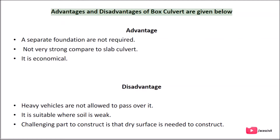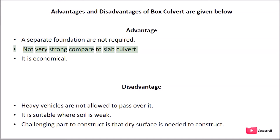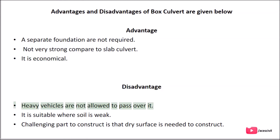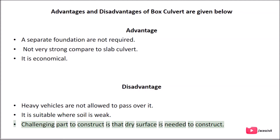Advantages of box culvert: Separate foundations are not required. It is economical. Disadvantages: It is not as strong compared to slab culvert. Heavy vehicles are not allowed to pass over it. It is suitable where soil is weak. A challenging aspect of construction is that a dry surface is needed to build it.